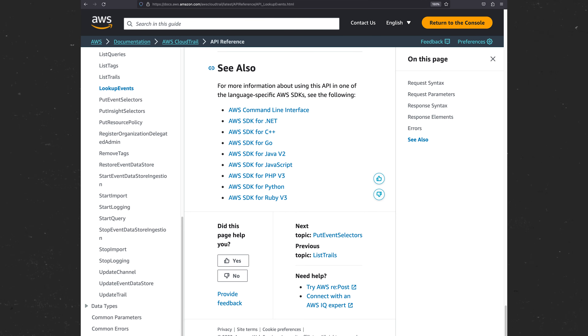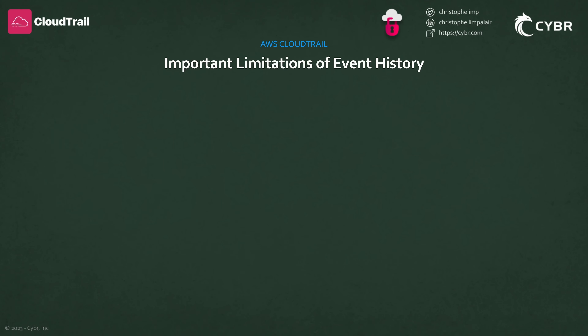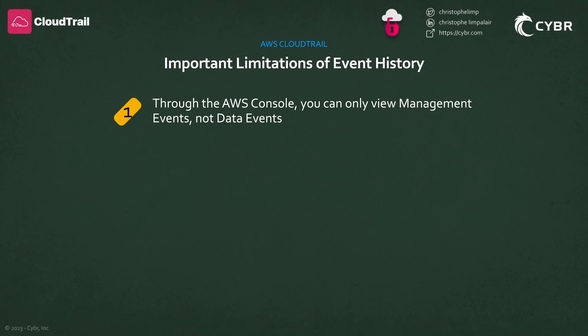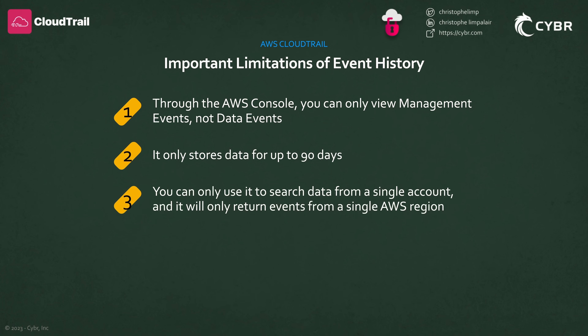There are a few important facts to keep in mind when we're using event history. Number one, when you're using the AWS console, you can only view management events — you do not see data events, even if they're enabled. Number two, it only stores data for up to 90 days, and then you lose that data permanently. Number three, you can only use it to search data from a single account, and it will only return events from a single AWS region.